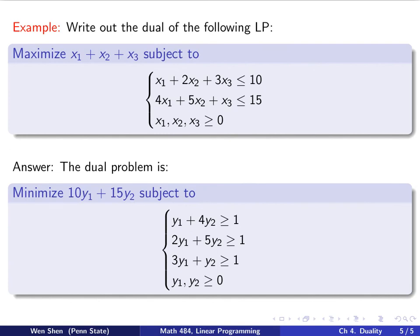And then, what are the constraints? The constraints will be adding these up vertically. Look at the coefficient. Multiply the first one by y1 and the second one by y2. Add them up. And that shall be bigger than the coefficient in front of the objective function.